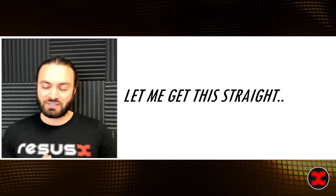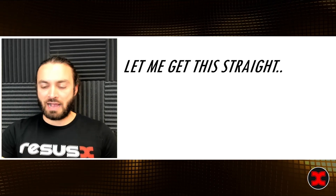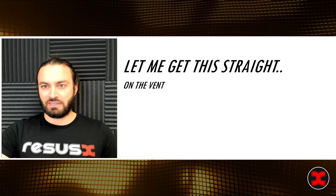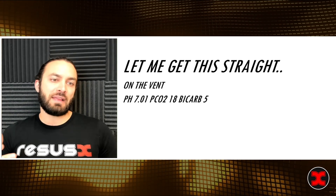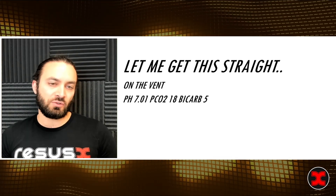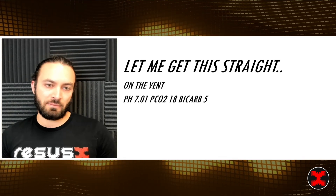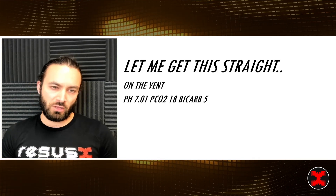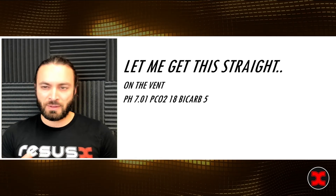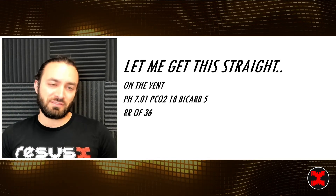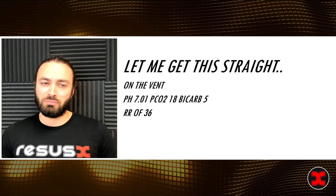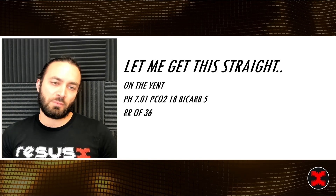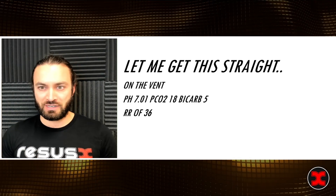When I think about my patients, I think about an ICU patient on the ventilator with a pH of 7.01, a PCO2 of 18, and a bicarb of 5 — an extreme version of severe metabolic acidosis. Because of this, I'm using the ventilator to blow off as much CO2 as possible, running a respiratory rate of 36. Nonetheless, that patient goes into cardiac arrest.